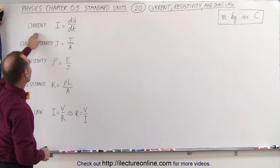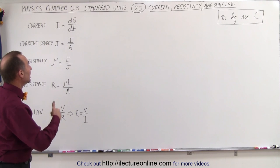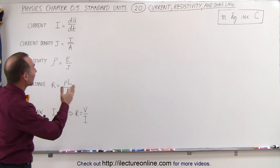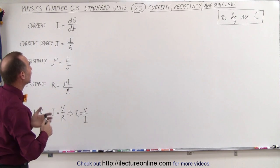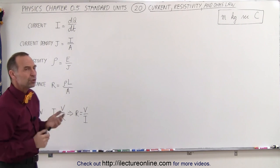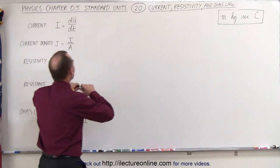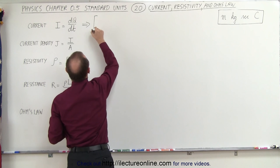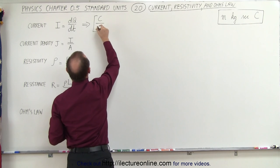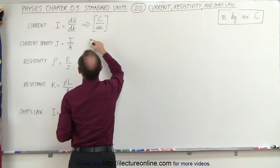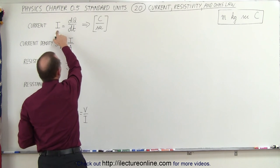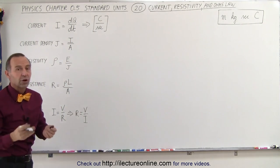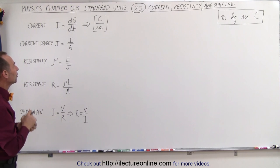Starting with current, we define current as being the rate of change, or the amount of charges passing by a given point per unit time — dQ/dt. So what are the units for current? We know that the units for charge are Coulombs, and time is seconds. So the unit for current is simply Coulombs per second — the amount of charge passing by a given point per unit time.